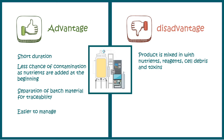The problem is that the product is mixed with nutrients, reagents, cell debris, and toxins, which might affect the yield — and in industrial settings, yield and profit are the biggest concerns. Additionally, since after one run of the bioreactor there would be some downtime, the effective productive time is really low. So overall productivity of this process is not so high.